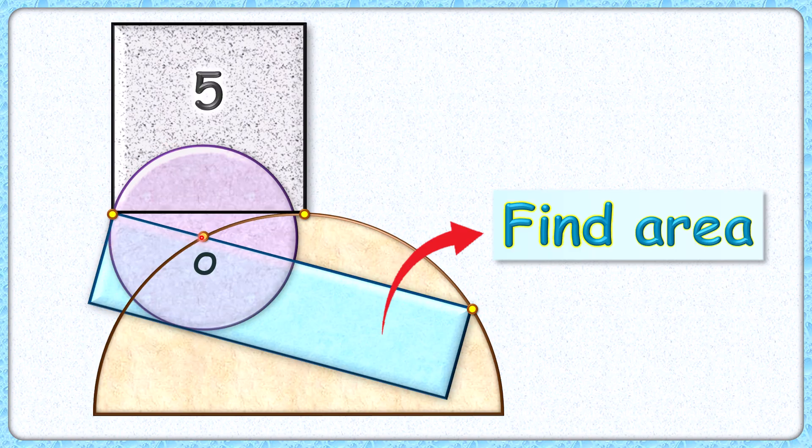The center of the circle lies on the circumference of the semicircle. The exciting part is with this limited data we have to find area of this blue rectangle.